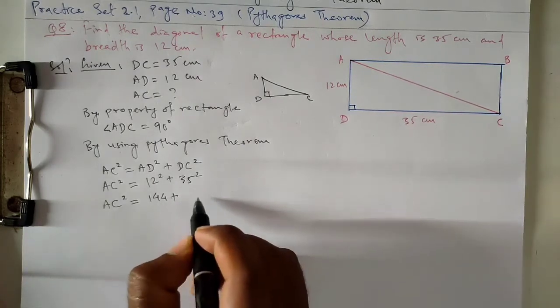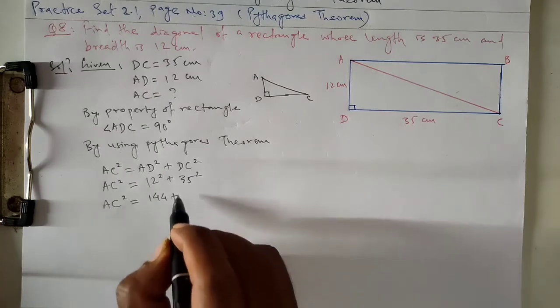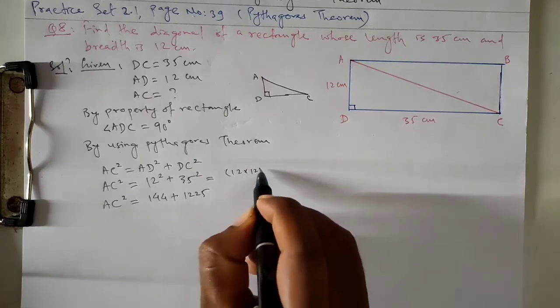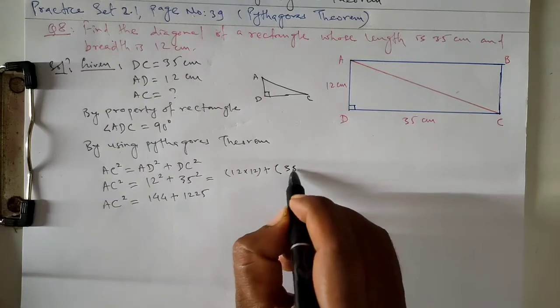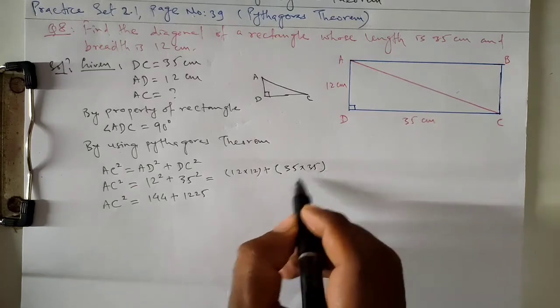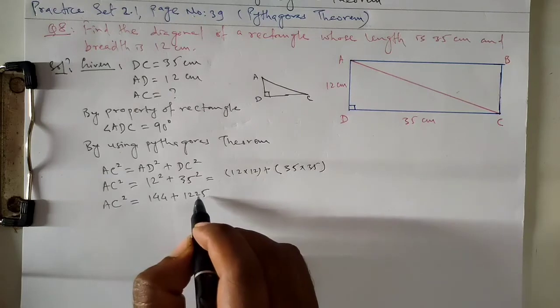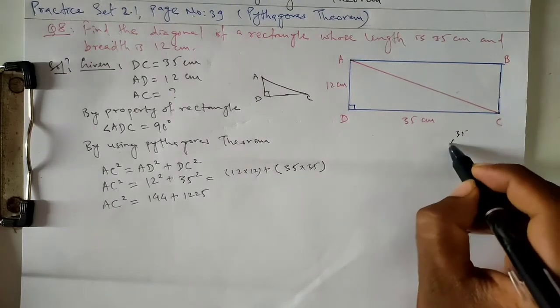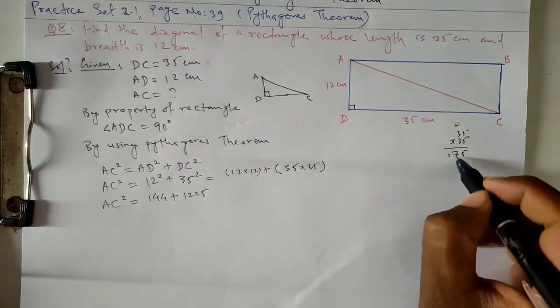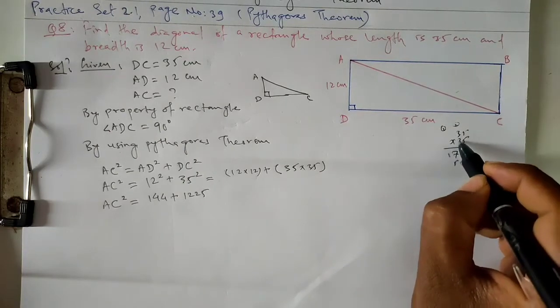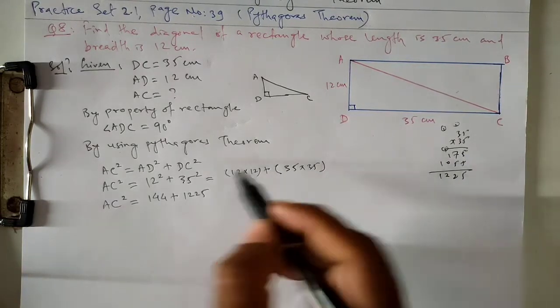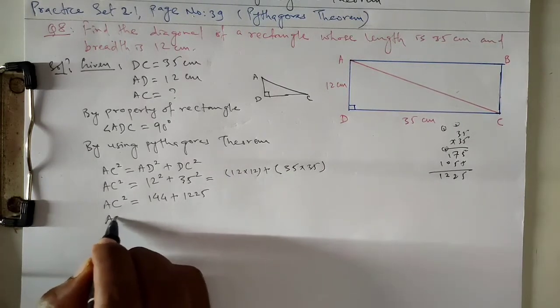12 square is 144, 35 square... 35 times 35: 5 times 5 is 25, carry 2; 5 times 3 is 15 plus 2 is 17, carry 1... equals 1225. AC square equals 144 plus 1225.